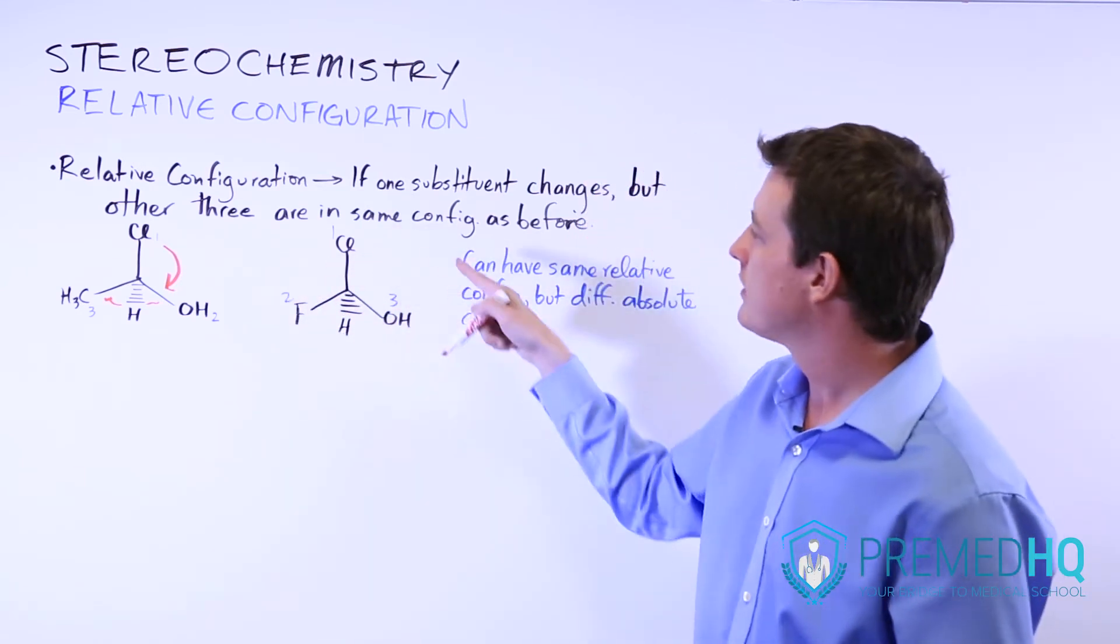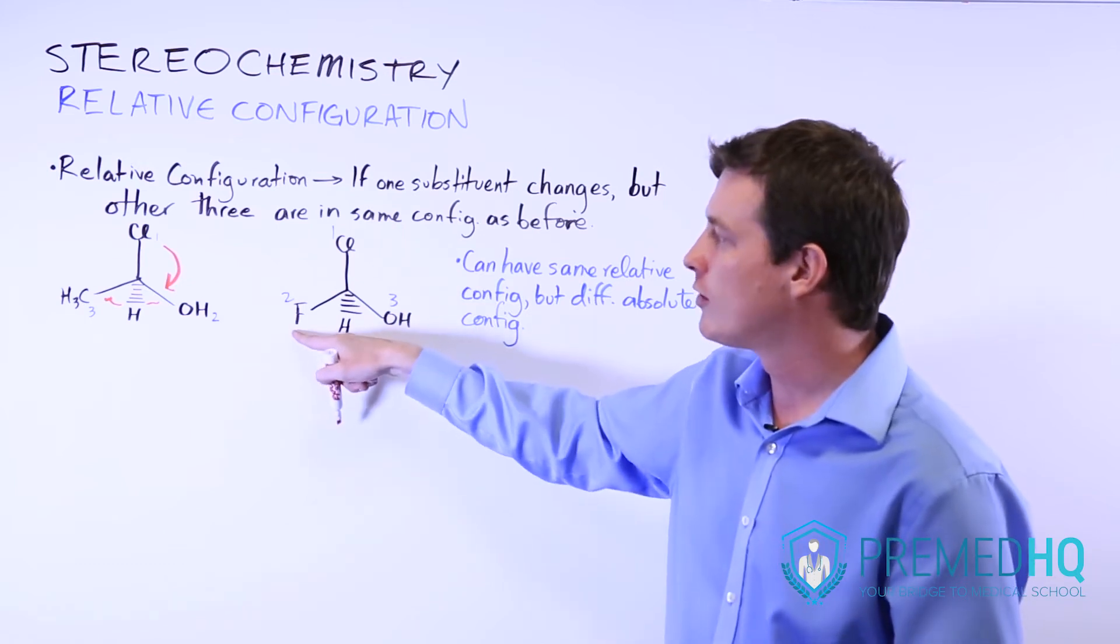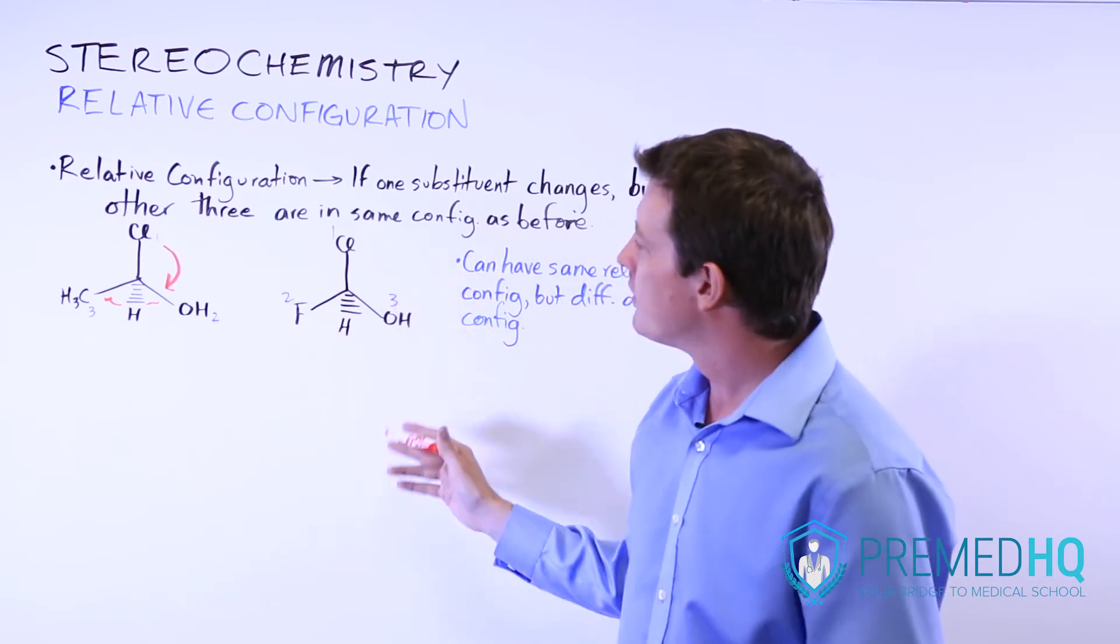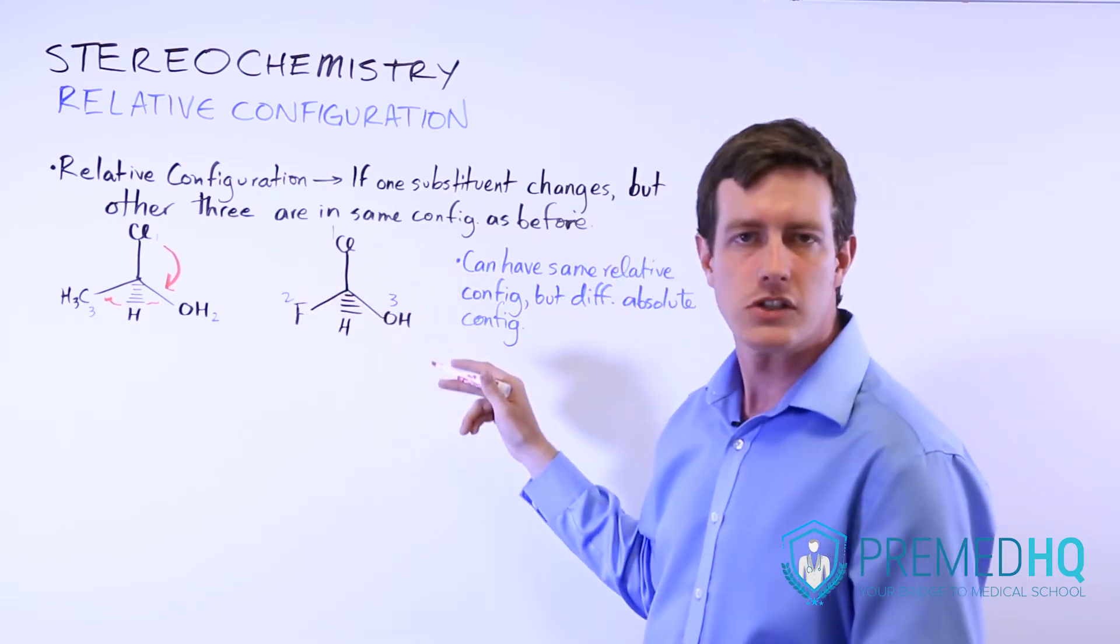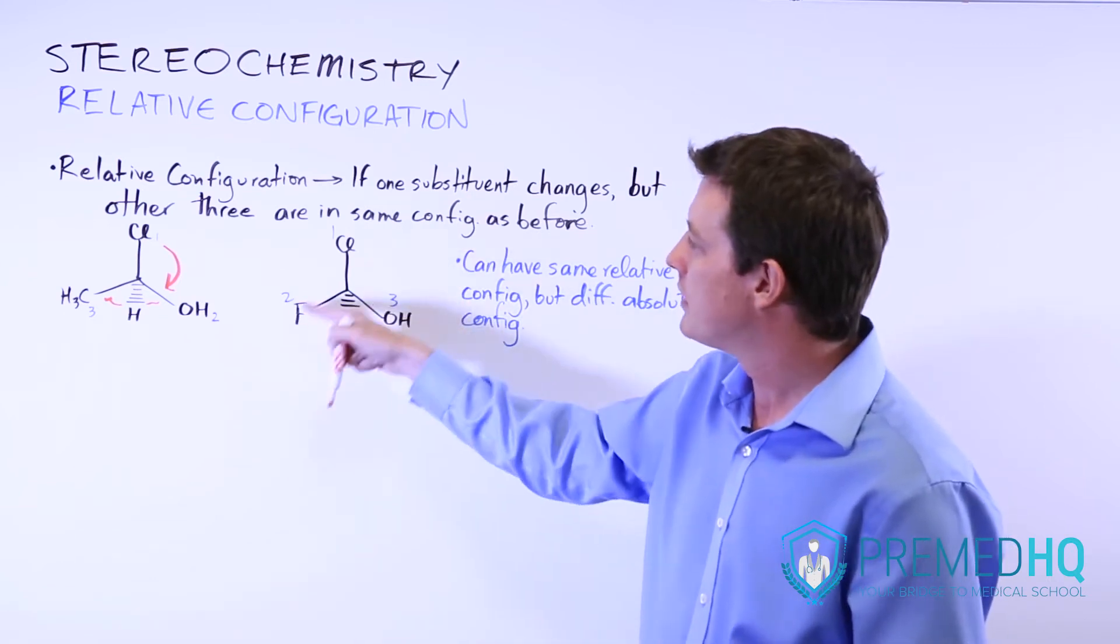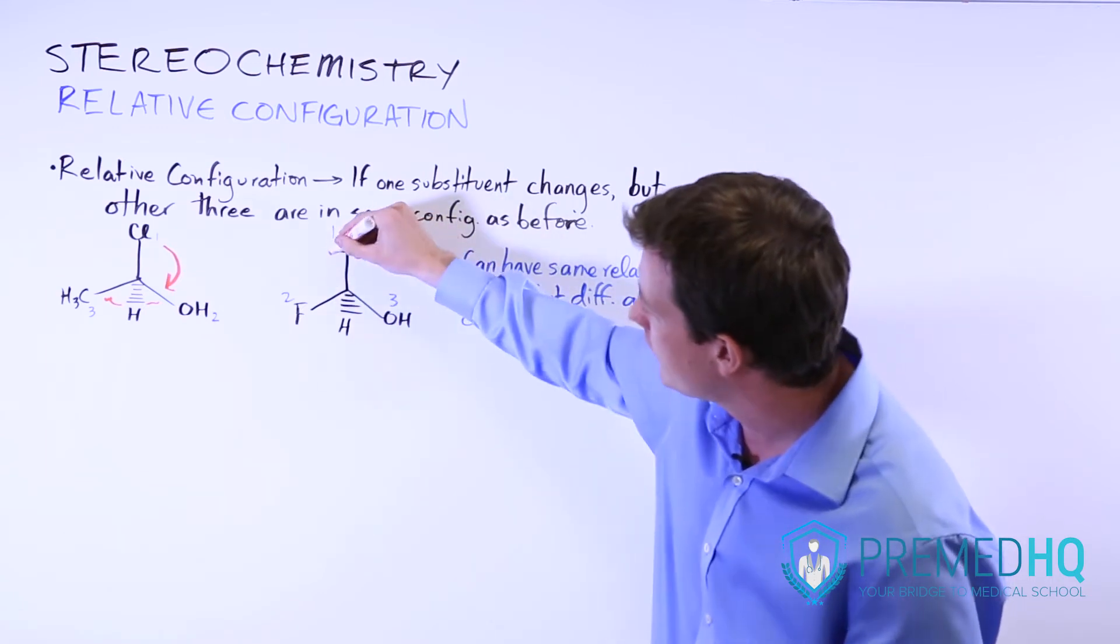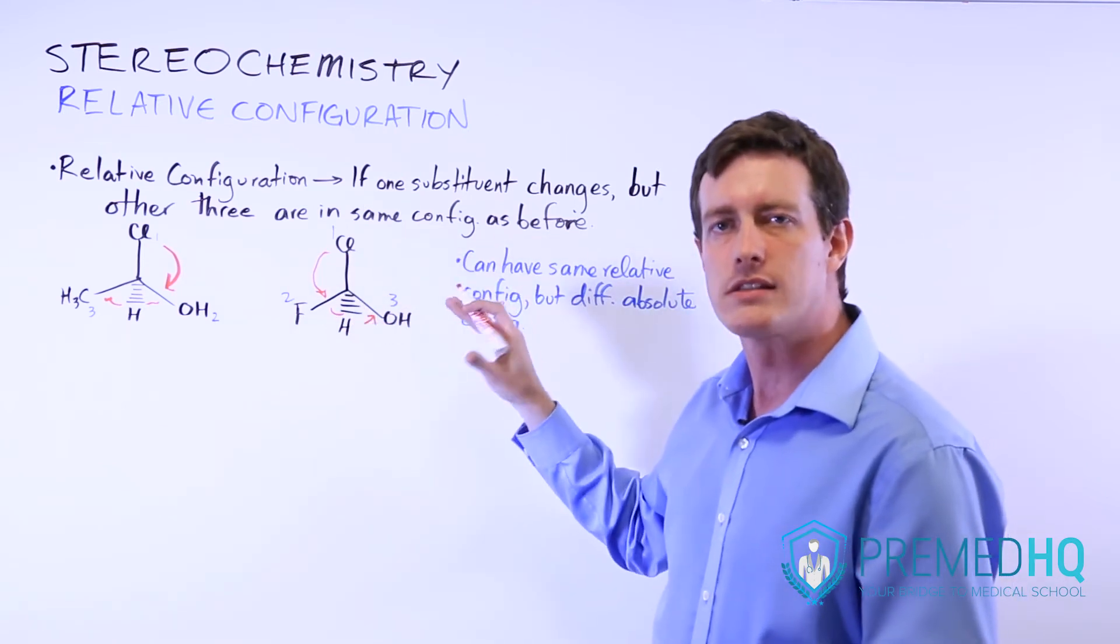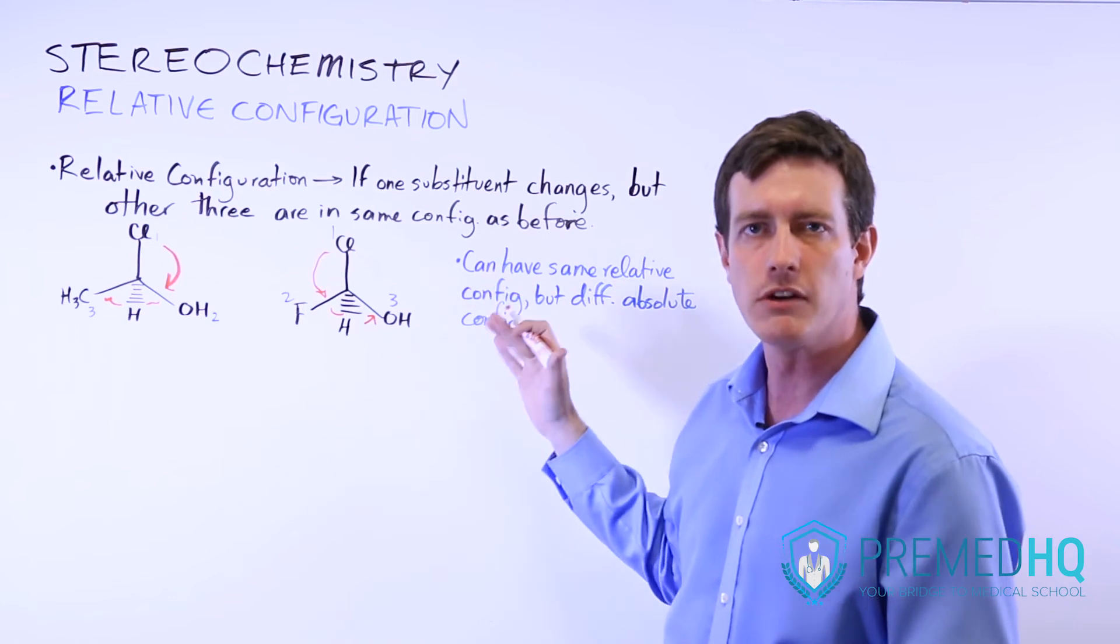Now here this still has the same relative configuration. We have chlorine, we have the hydroxyl group and the hydrogen, with the one different substituent being in the same position. However, because the fluorine coming in is higher than oxygen in terms of its atomic mass and its atomic number, it ends up that this is now a substituent number two. So we go from one to two to three by going in a counterclockwise direction. And that makes this an S compound when we're looking at the absolute configuration.